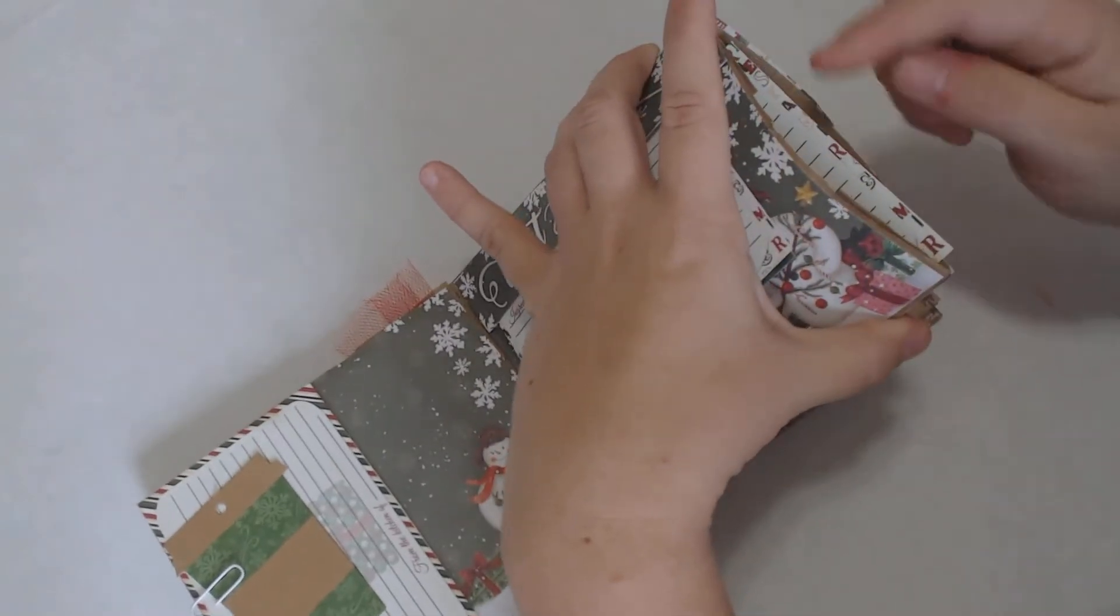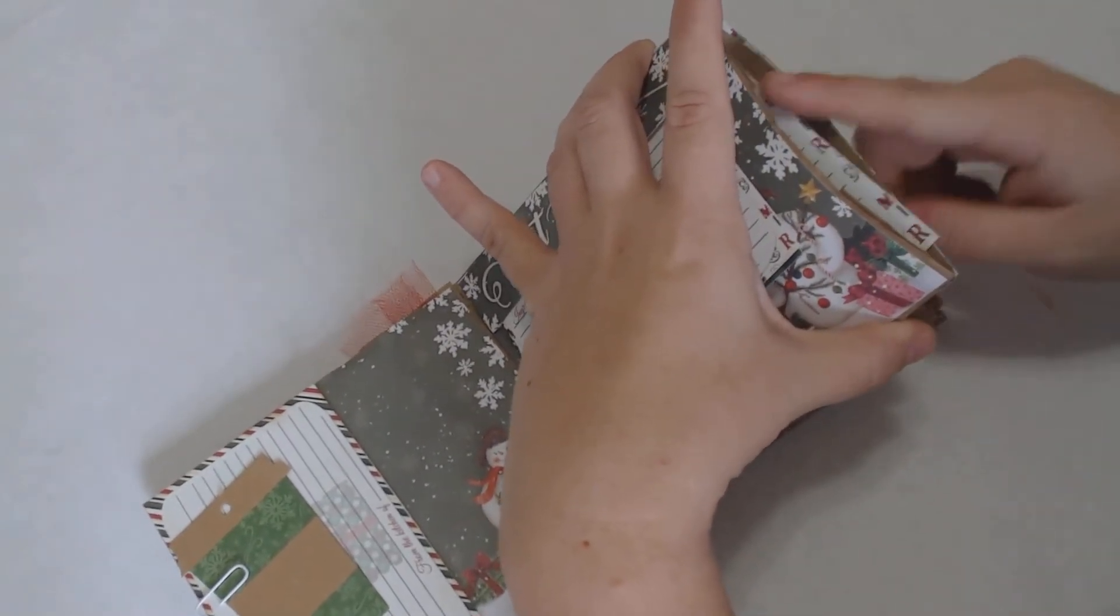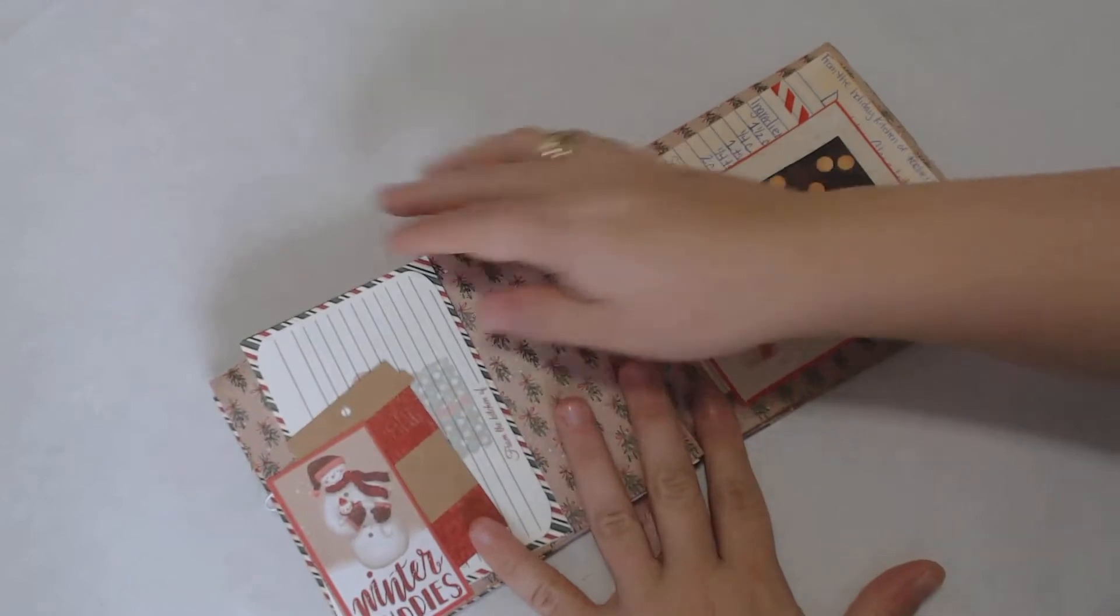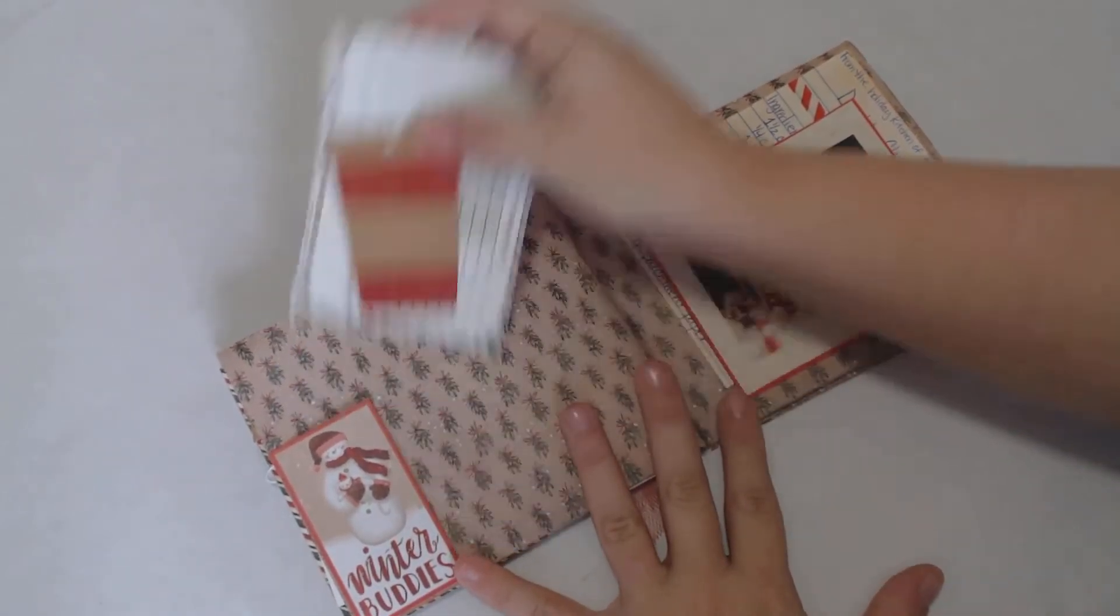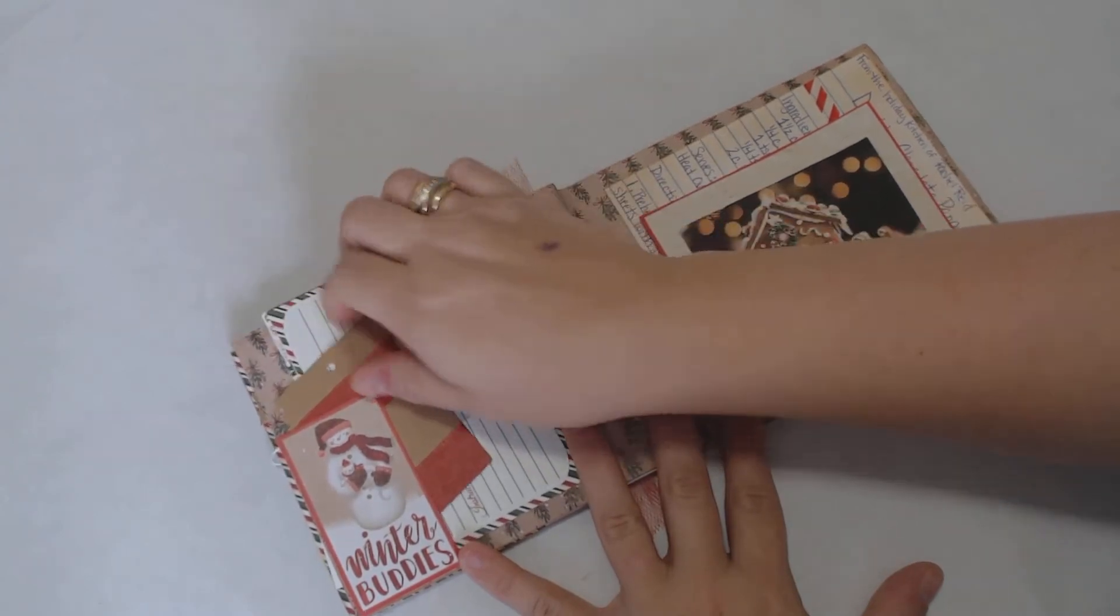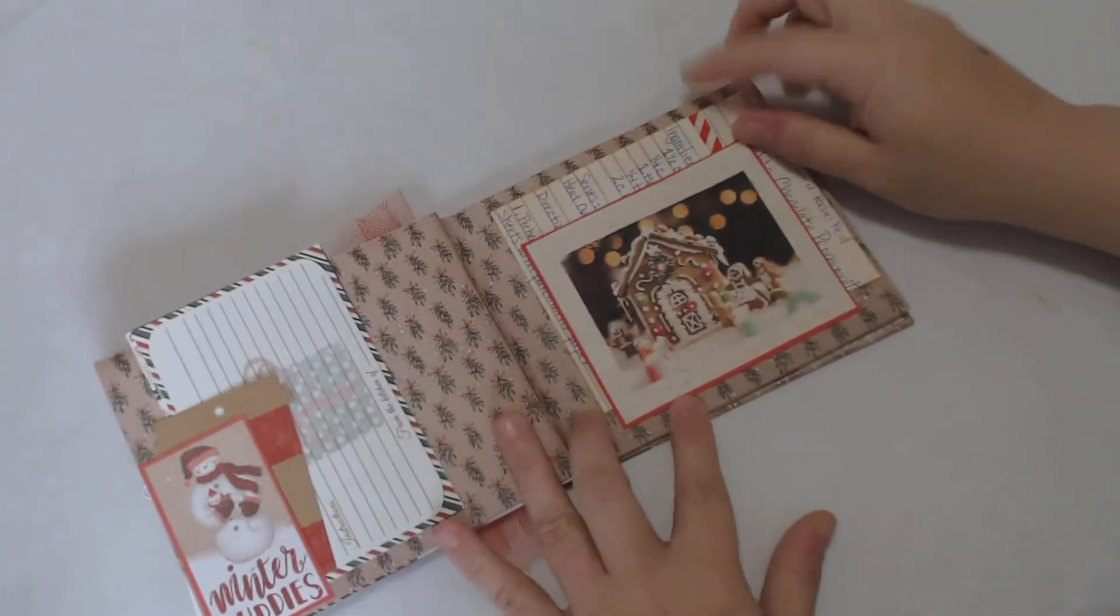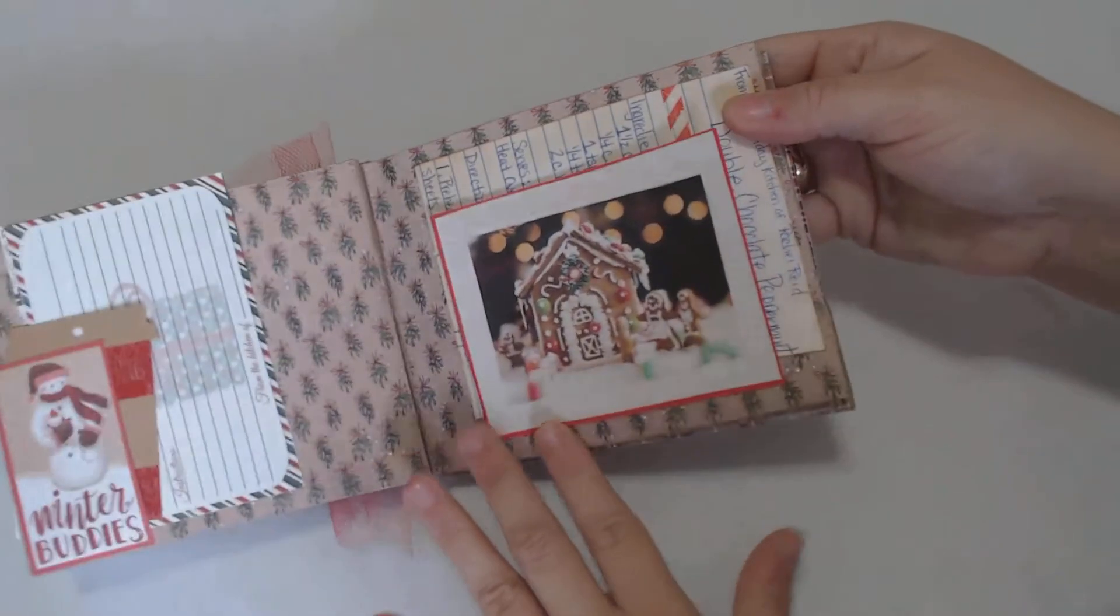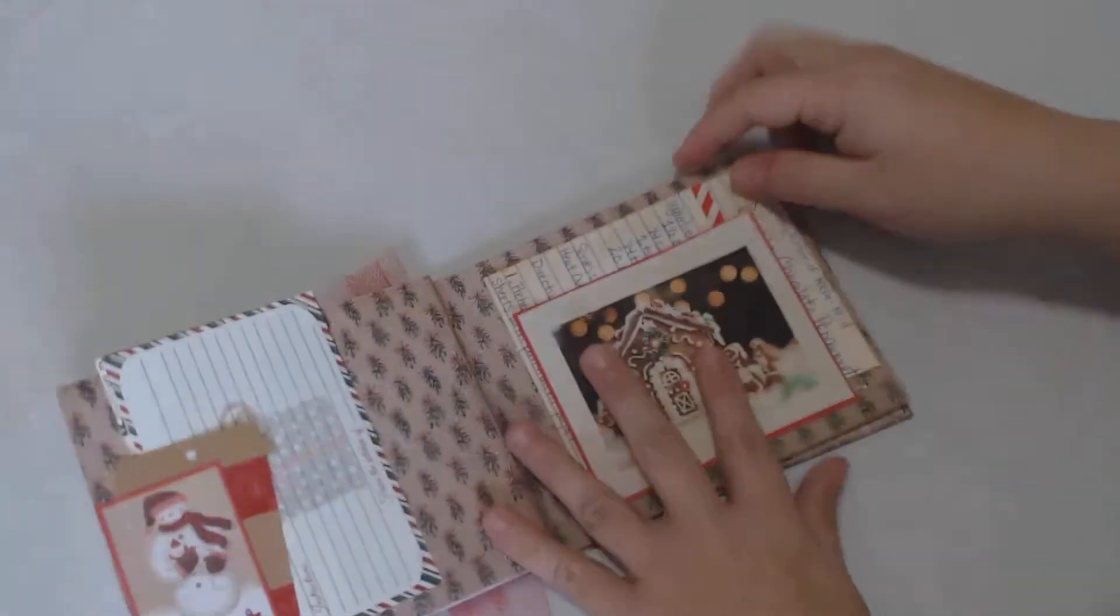You can probably get six or seven recipe cards in there. Here's another little tuck spot. I kept it fairly neutral in color. This is just an image that I got off the internet and I made a tuck spot.